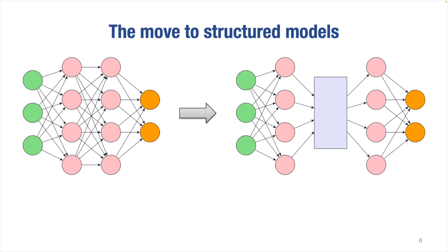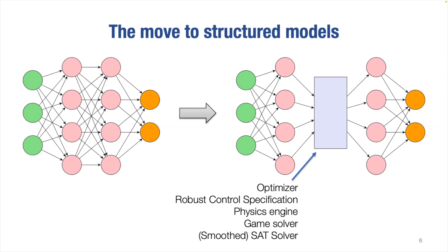Neural networks, fundamentally, are composable differentiable functions. That's how we train them, how we build them, and how we leverage PyTorch or anything else — they're just differentiable functions hooked together to transform inputs to outputs. Because of this, we can plug anything we want in as a layer. In particular, you can plug in optimizers, a quadratic programming solver, a robust control specification, or even a physics engine as a layer in your network.